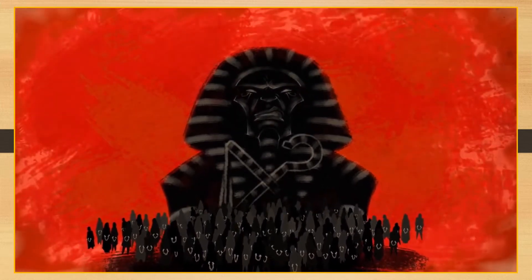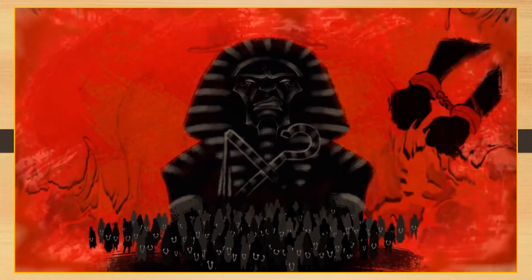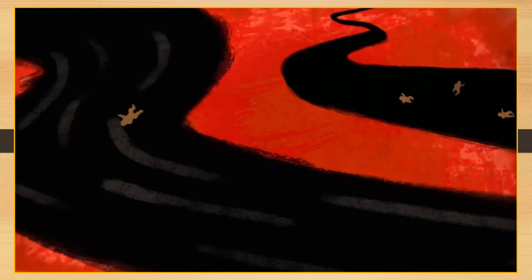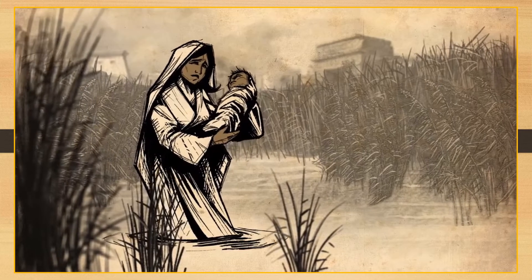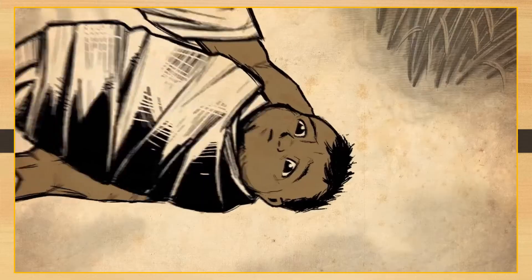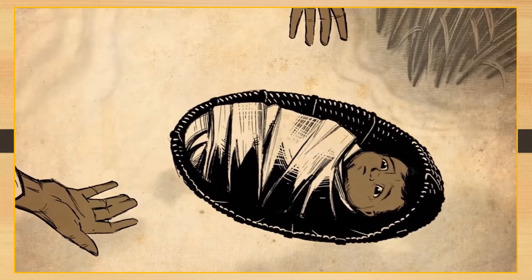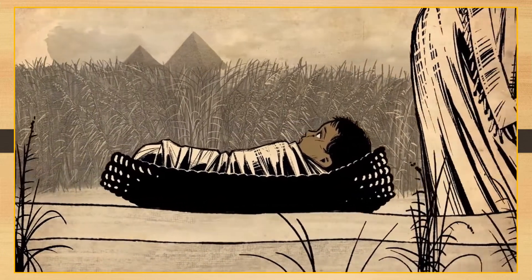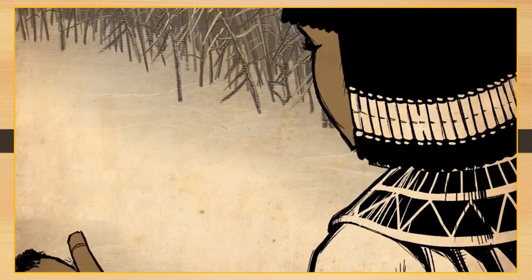This guy is really bad news. He disregards their humanity, he brutally enslaves them, and he even orders that all of the Israelites' sons should be killed by throwing them into the Nile River. He wants to wipe these people out. Here we meet an Israelite woman who wants to save her son, so she does throw him in the river, but safely in a little reed basket. Pharaoh's daughter finds this baby and takes him as her own. This is the boy who grows up to become Moses, the man who will rescue Israel from slavery.